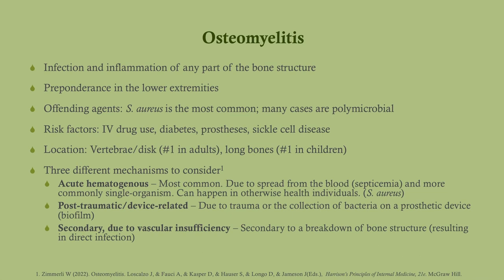Osteomyelitis is an infection and inflammation of any part of the bone structure. There tends to be a preponderance in the lower extremities — why? Because our circulation to the lower extremities is not quite as good. Diabetics have an increased risk for osteomyelitis, but there is a preponderance in the lower extremities even in children. There's also a preponderance in the vertebral bodies.